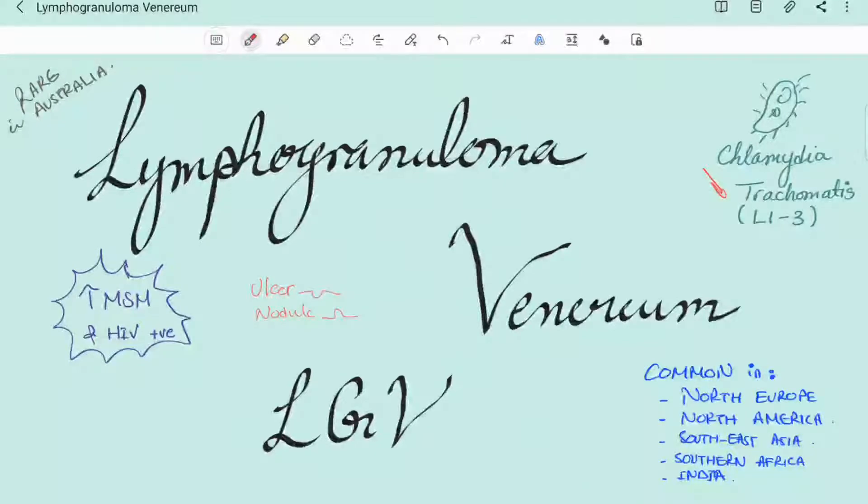Lymphogranuloma venereum, LGV, is a rare condition in Australia, but an increase has been observed in men who have sex with men, many of whom have also been HIV positive. These men usually present with symptoms of proctitis. LGV is common among men who have sex with men in Northern Europe and North America, and is endemic in the general population in several tropical areas, such as Southeast Asia, Southern Africa, and India.